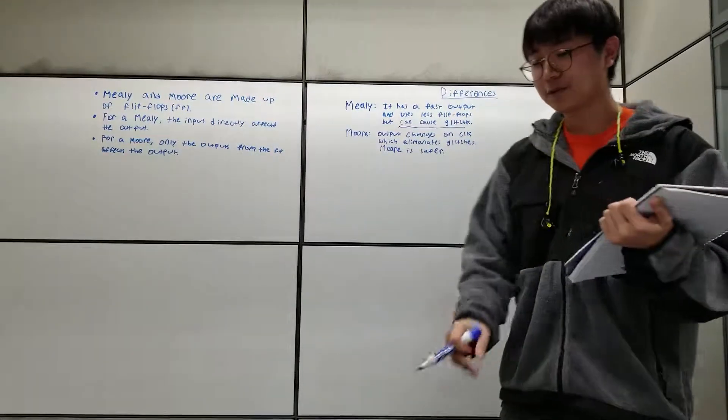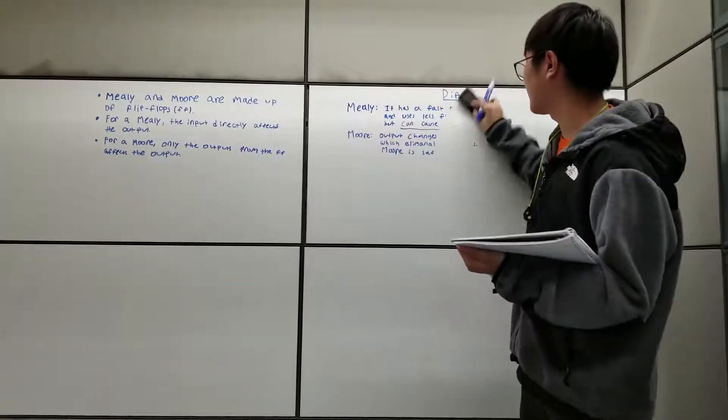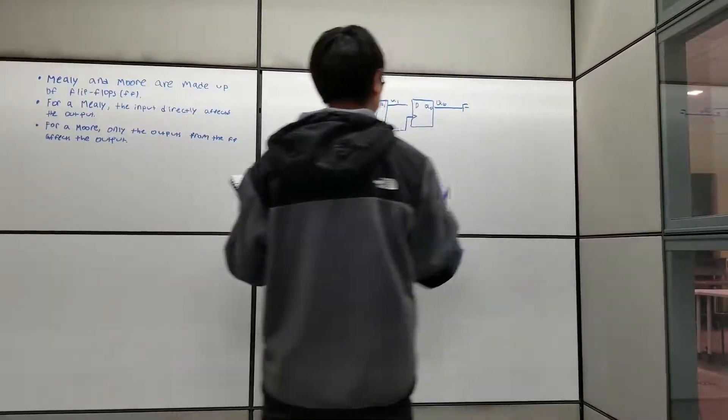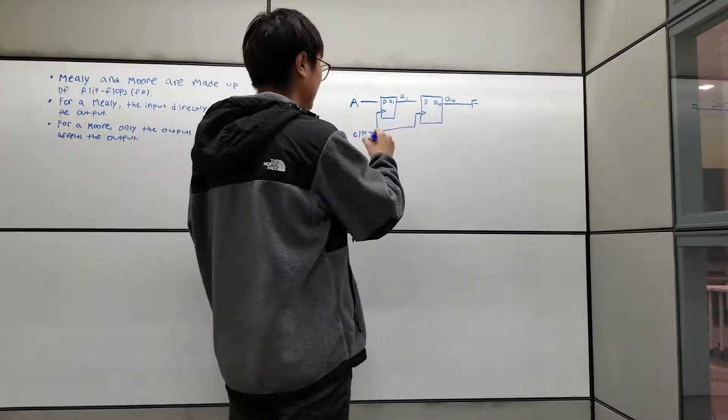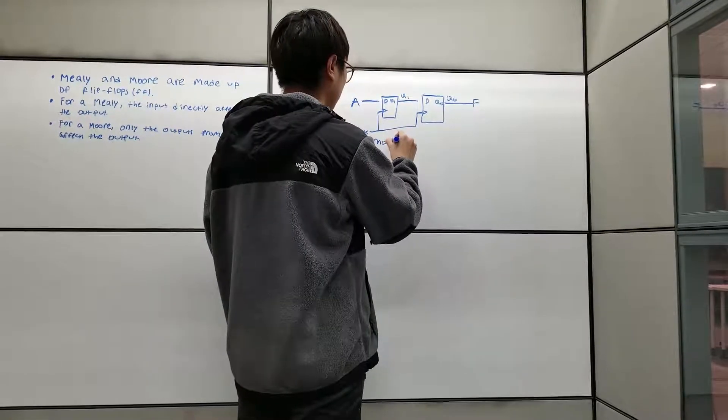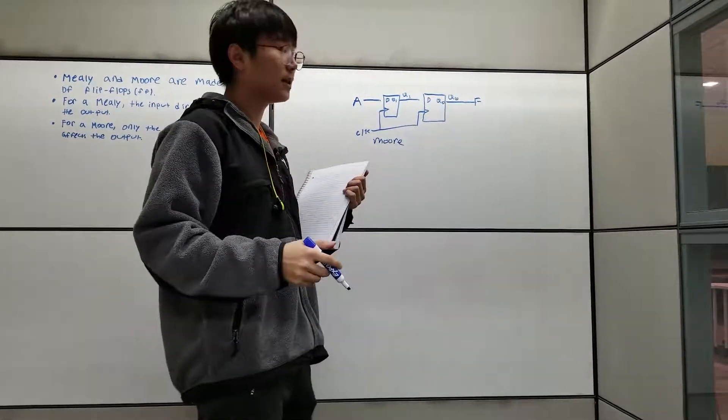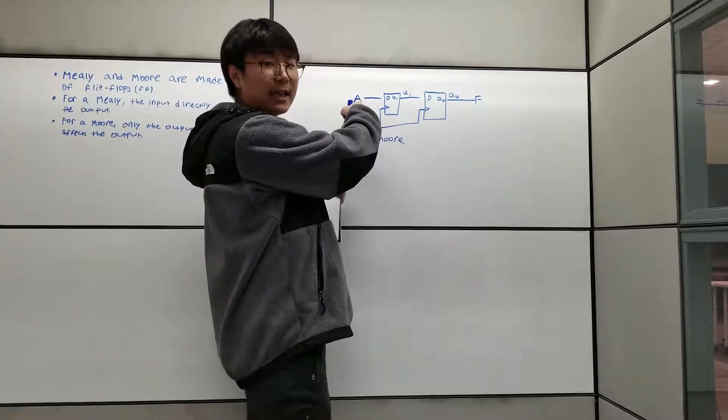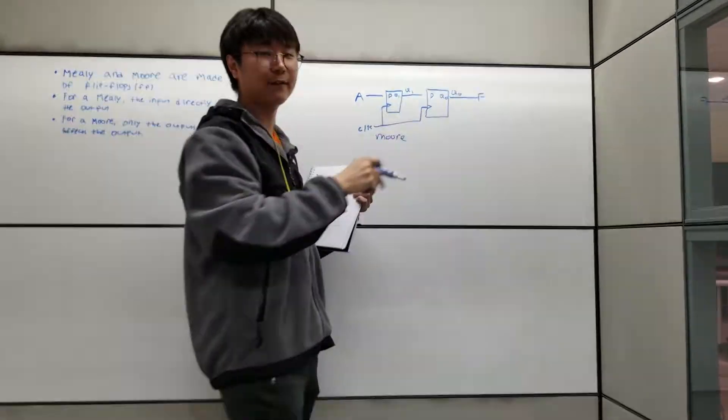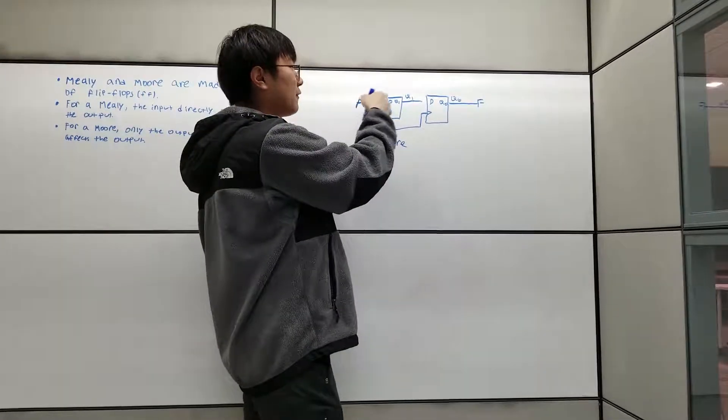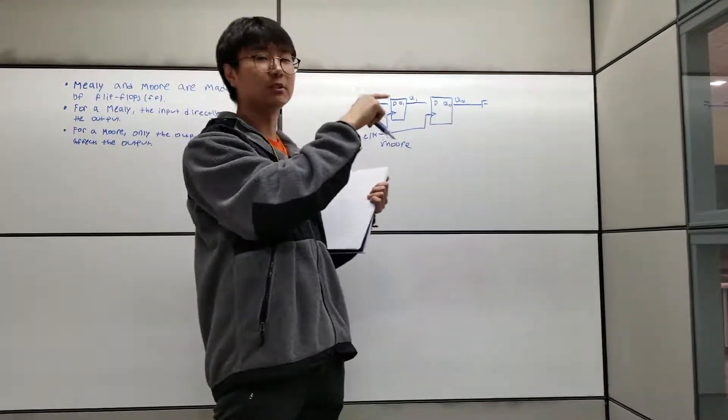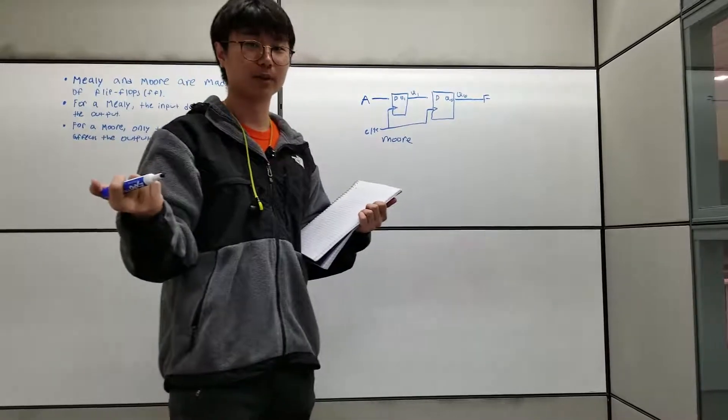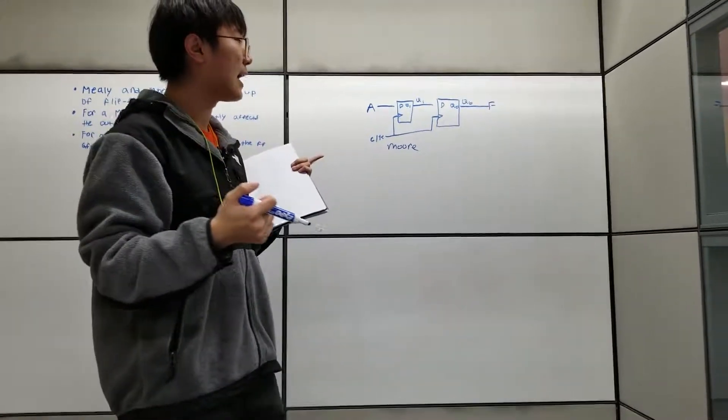If you look at a circuit diagram, this is an example of a Moore circuit diagram. The reason is because the input A does not affect F in any way. A will affect Q1, and then Q1 affects Q0, and Q0 will affect the final output. Hence this is a Moore.